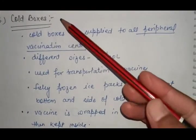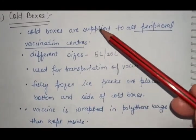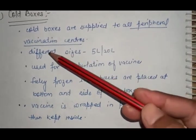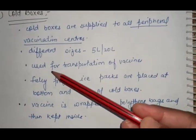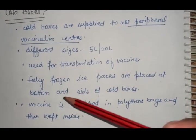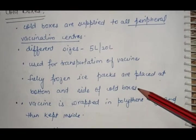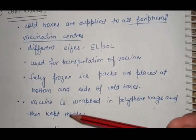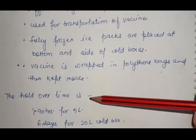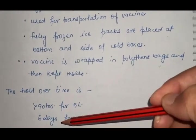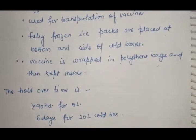Fifth are cold boxes, supplied to peripheral vaccination centers. Different sizes, 5 to 20 liters, used for transportation of vaccines. Fully frozen ice packs placed at bottom and sides. Vaccines wrapped in polythene bags and kept in between. Holdover time is more than 90 hours for 5 liters and more than 6 days for 20 liters.